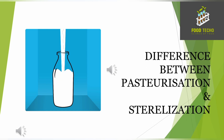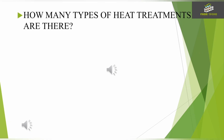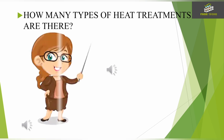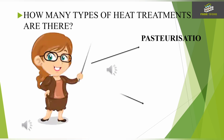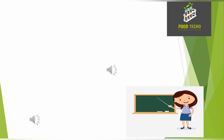Here we are with another topic on the difference between pasteurization and sterilization. How many major types of heat treatments are there? Mainly there are two types of major heat treatments which are performed in industries: 1. Pasteurization and 2. UHT or Sterilization. What is pasteurization?